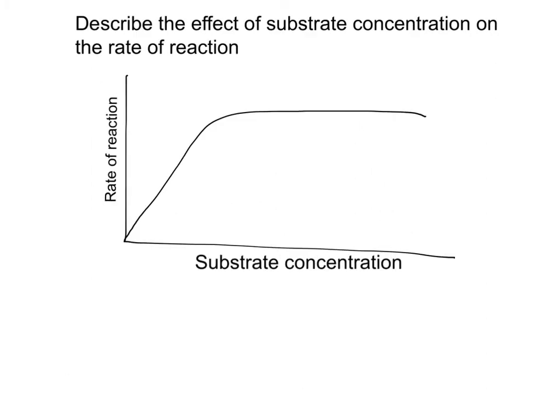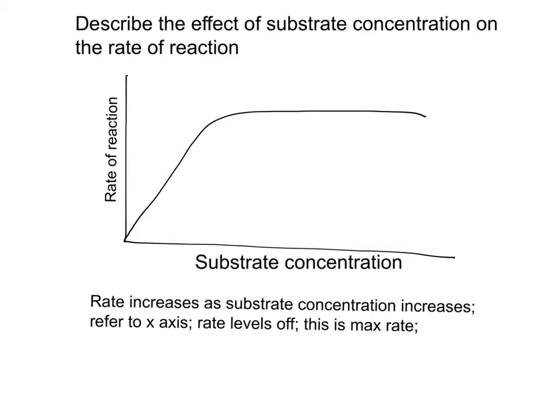Describe the effect of substrate concentration on the rate of reaction. Tell the examiner about the shape of the curve and remember to refer to the x-axis. The rate increases between whichever substrate concentrations you read from the x-axis, and then it levels off. This is the maximum rate of reaction. Refer to the concentration at which it levels off. These are the key mark points you need to know.